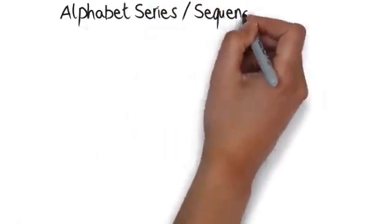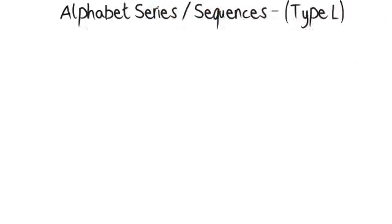Alphabet series sequences type L. In these types of questions, you will be given pairs of letters and asked to write down the next pair in the sequence. You will normally be given a copy of the alphabet for these questions.